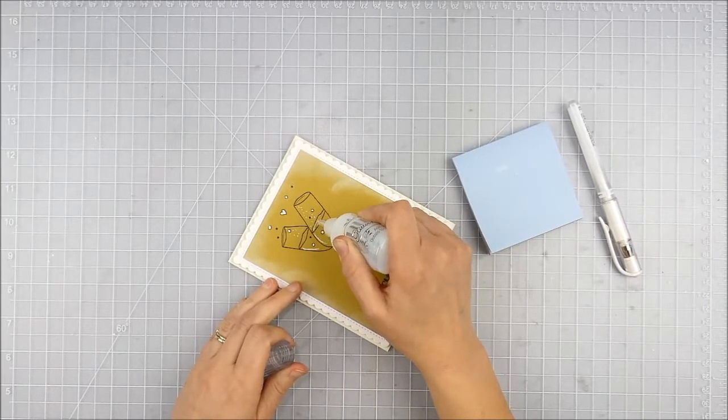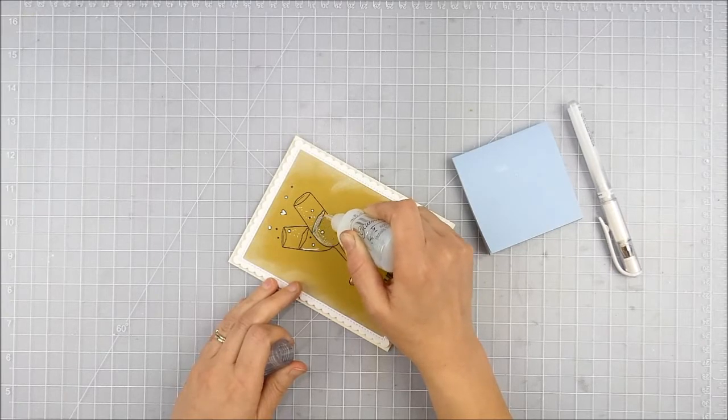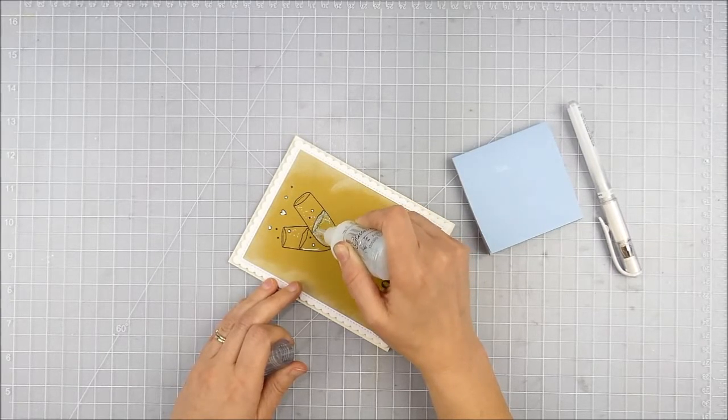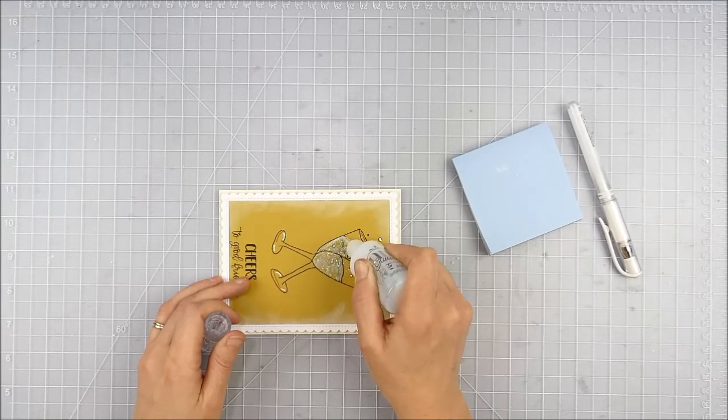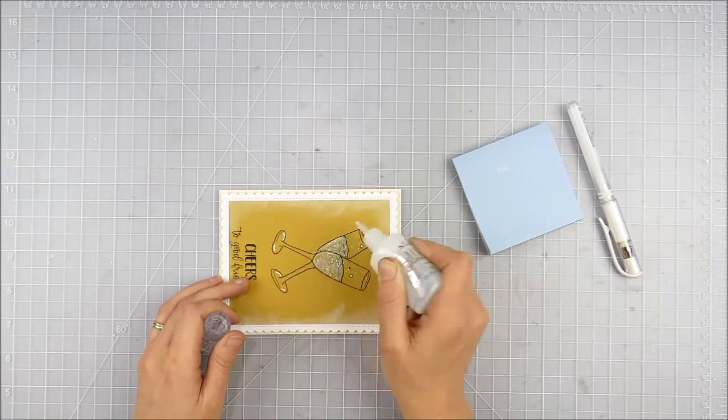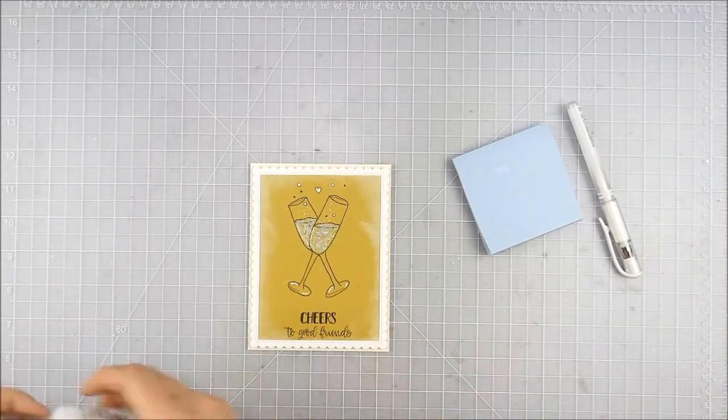All right, I'm going to do the same thing and start off. This is some Nuvo Glitter Drops in Blizzard, which are just clear and sparkly. I'm going to use that to cover the bubbly in the glass. I just kind of outline the edges and then fill in the center, trying to keep it as smooth and level as possible so when it dries it just kind of has a level texture.